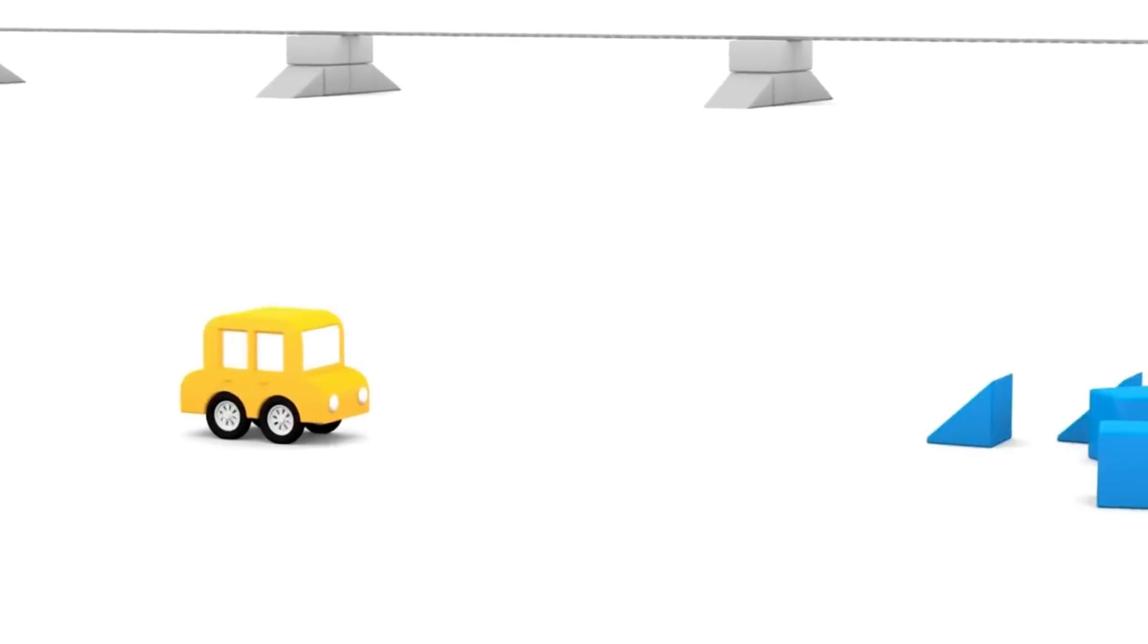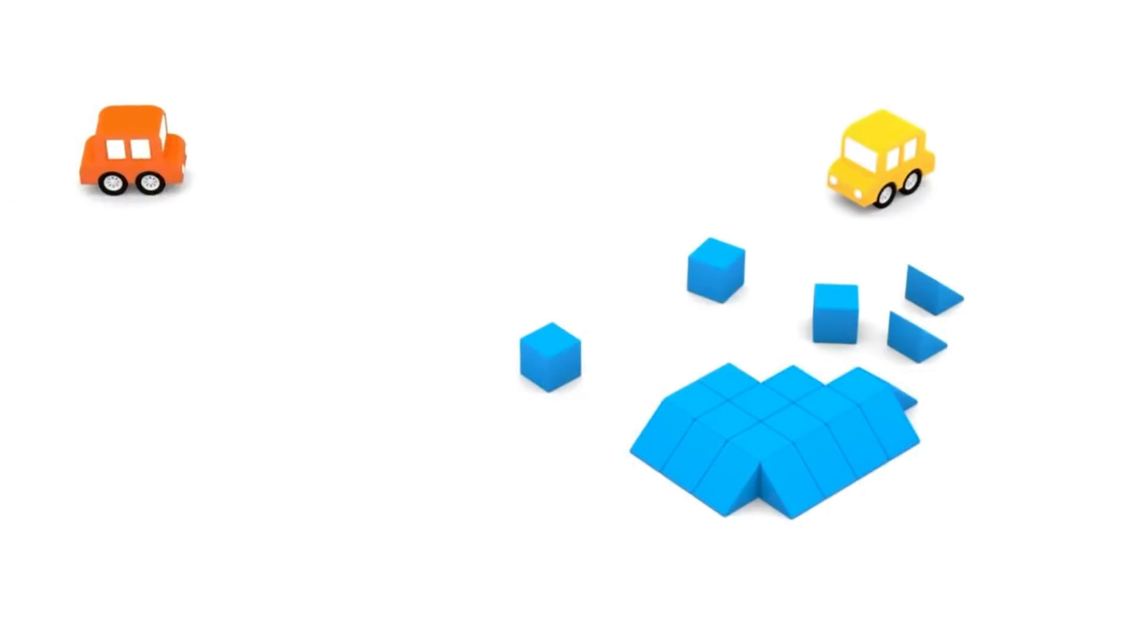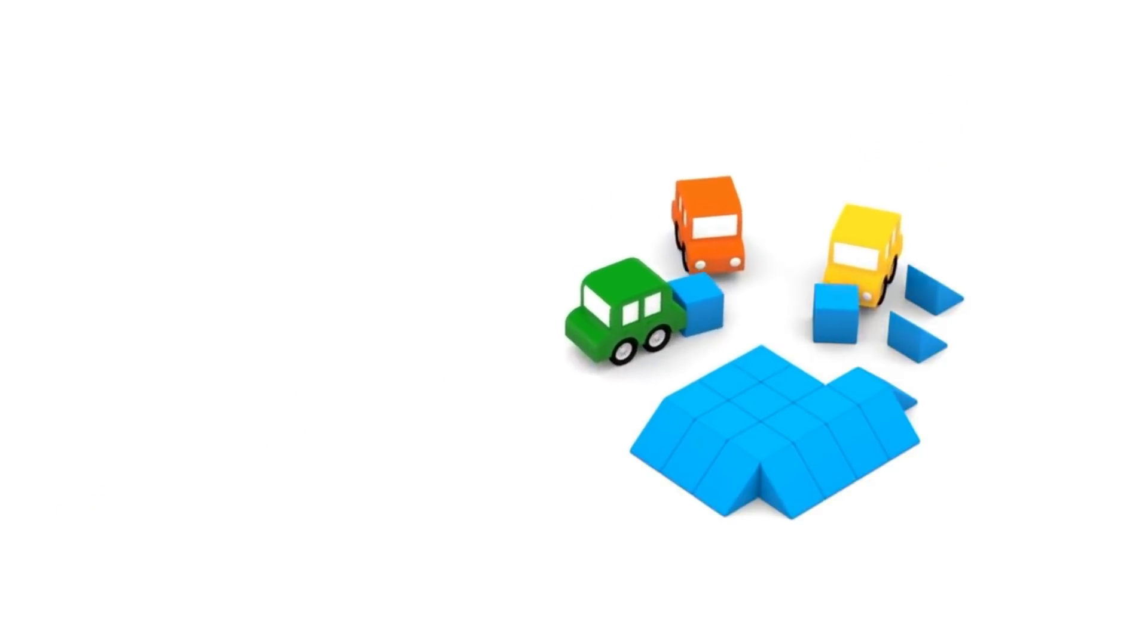Look, our friends of four little color cars are building something again. They are using blue cubes. A cube is like a three-dimensional square.